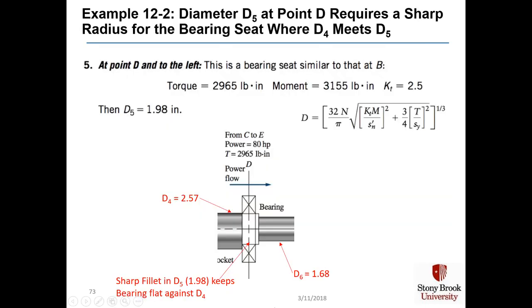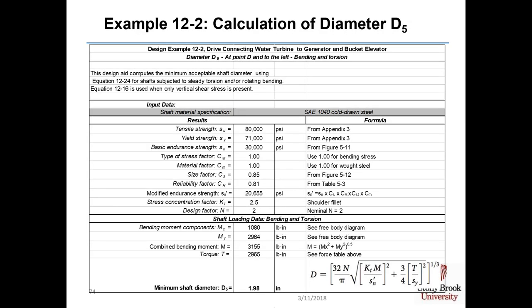The large moment and torque values give a minimum shaft diameter of 2.42 inches, which bumped up by the factor of 1.06 becomes 2.57 inches. Diameter D5 at point D requires a sharp radius for the bearing seat where D4 meets D5 — very similar to the situation at point B. With KT equal to 2.5 and our torque and moment values, we get D5 equal to 1.98 inches.